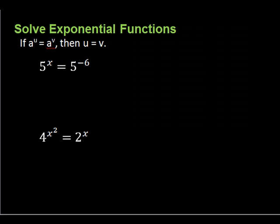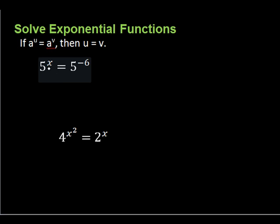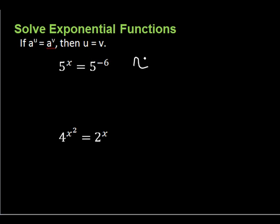Let's solve exponential equations — this is my absolute favorite thing to do. Don't be shocked if you see this on the chapter 5 test or the final. One thing to remember: if a^u = a^v (bases are the same), then their exponents are equal. Let's look at this first one: 5^x = 5^(-6). We can see that x = -6 in this case.